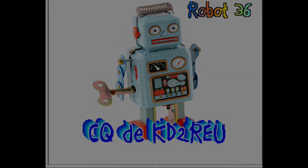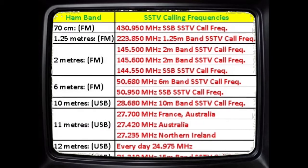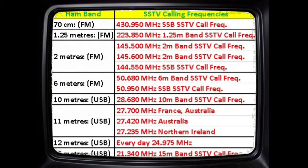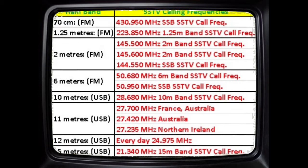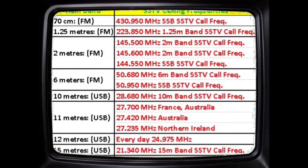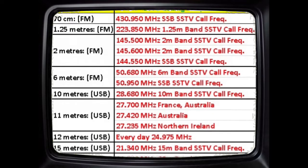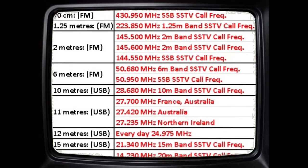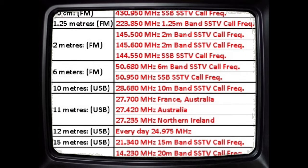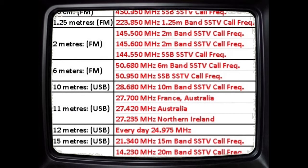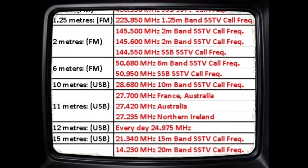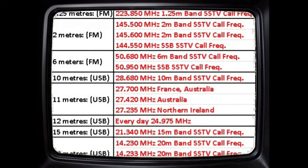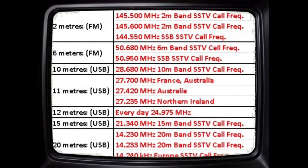SSTV can be used as a communication method on almost any band that you're licensed to transmit on. We generally use standard call frequencies on each band so that other operators know where to look for your signal. Technically, you only need an audio source delivering the encoded signal and a free app to decode the SSTV image being received.